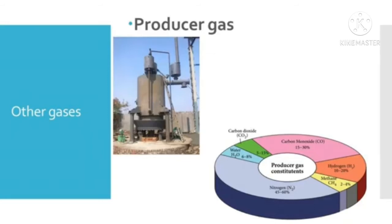Producer gas is known by different names in different countries. It is referred to as wood gas in the United States of America and as suction gas in the United Kingdom.